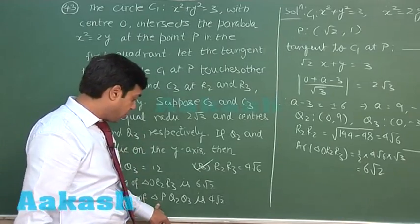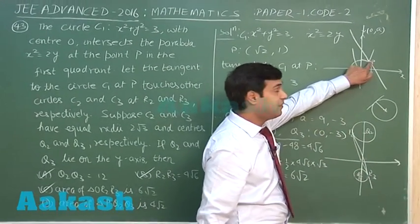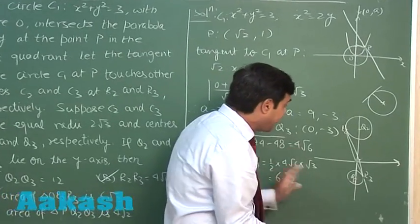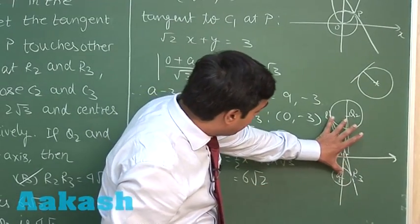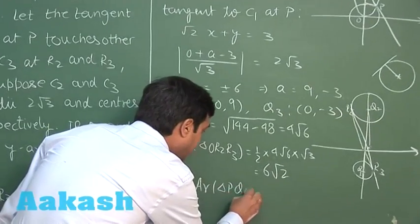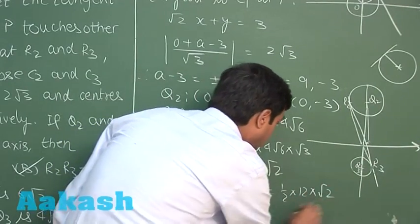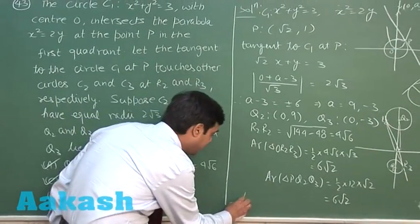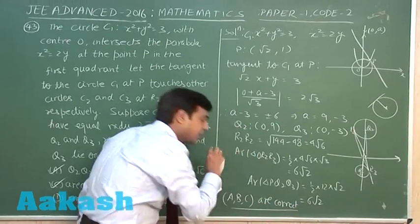For option D, area of triangle PQ2Q3: base Q2Q3 = 12 and the height is the x-coordinate of P, which is √2. Area = ½ × 12 × √2 = 6√2 square units. So option D is not matching the given value. From the given options, A, B, and C are correct. This is a good question from coordinate geometry.